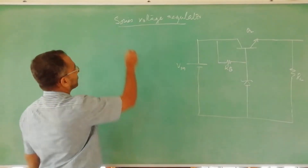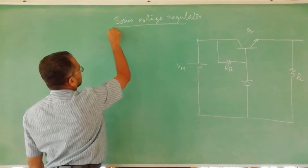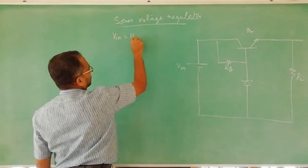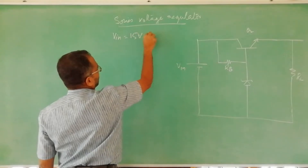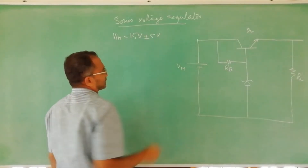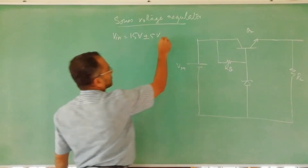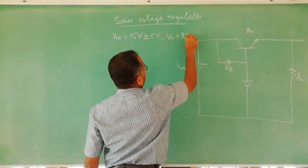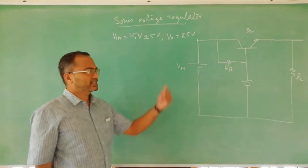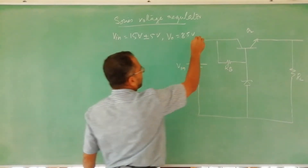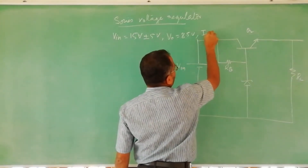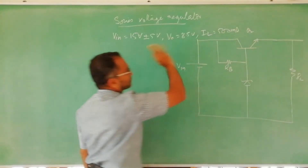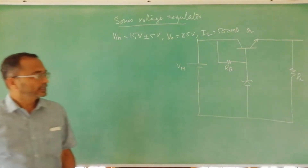The objective of the circuit is: from a given input voltage that varies from 15 volts plus or minus 5 volts, we have to get an output voltage of 8.5 volts. The output current IL is equal to 500 milliamperes. This is our objective.